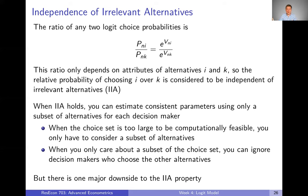So just a huge choice set. One nice thing about IIA is that if your choice set is that large and computationally infeasible, you can actually get consistent parameter estimates using only a subset of the alternatives. You don't have to think about all the alternatives — you can just randomly select a few and still get consistent parameter estimates. We're in a world now where computational feasibility is becoming much broader, so that might not even be such a concern anymore, but back in the eighties it was, and that was one nice aspect of assuming IIA.